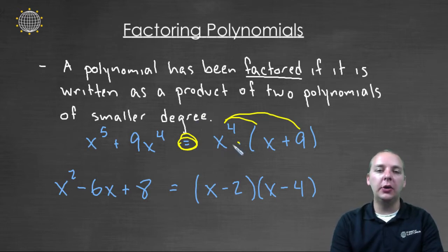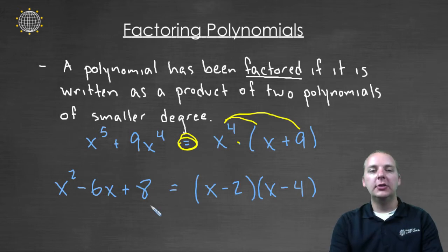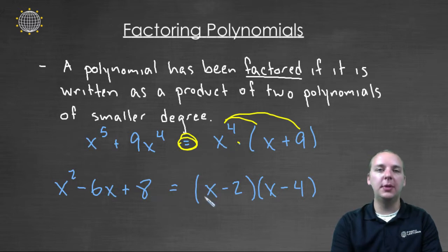But notice how different the second example is. X squared, six x, and eight don't have anything in common among all three. So something must be different. The technique used between these two must have been different, and that's the case.